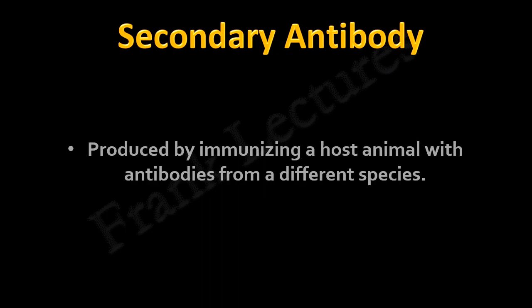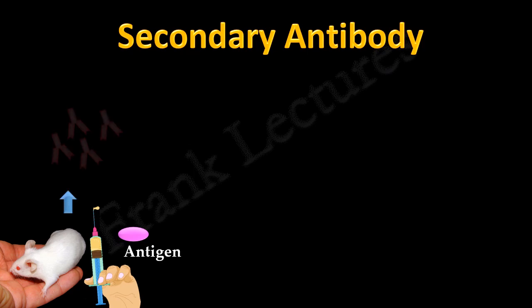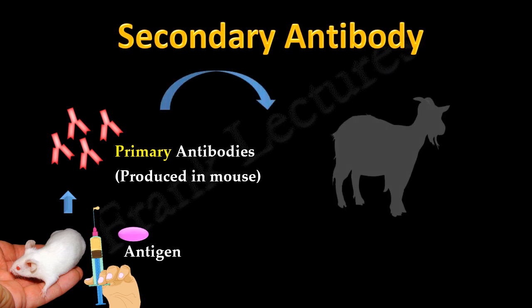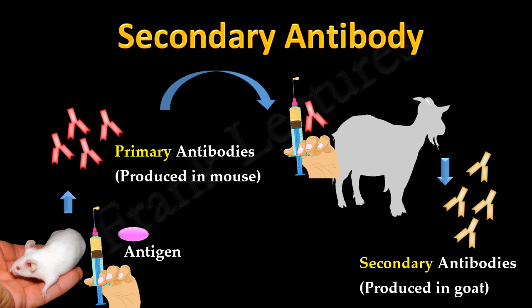Secondary antibodies are produced by immunizing a host animal with the antibodies from a different species. For example, let's say a target antigen was injected into a mouse, and thus primary antibodies were produced in mouse. Now these primary antibodies from mouse are injected into another animal species — let's say goat. To the immune system of goat, these primary antibodies from mouse are foreign, or non-self. Therefore, goat's immune system will start producing antibodies against these primary antibodies. These antibodies produced in goat are the secondary antibodies.